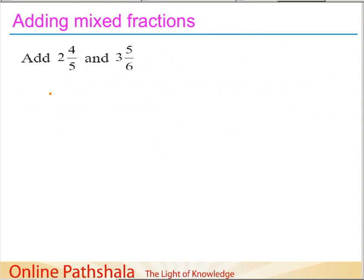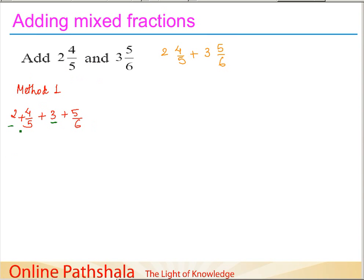We need to add 2 and 4/5 plus 3 and 5/6. In Method 1, we consider the whole parts and fraction parts separately. We write 2 and 4/5 as 2 plus 4/5, and 3 and 5/6 as 3 plus 5/6. We then separate the whole parts: 2 plus 3, and consider the fraction parts 4/5 plus 5/6 separately.